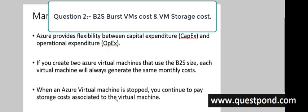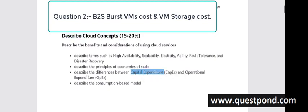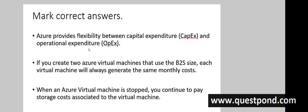Let's start with Question 2. This question is again related to Chapter 1 — Cloud Concepts, CapEx, OpEx, and the economies of cloud. The question says: mark which of the below statements are correct. Statement 1: 'Azure provides flexibility between CapEx and OpEx.' As explained previously, when it comes to any cloud — Amazon or Azure — it's always about financial flexibility, so this statement is True.